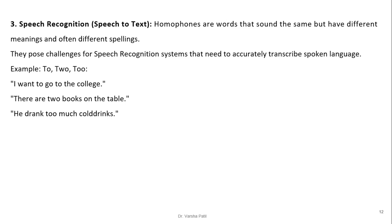Speech recognition (speech-to-text conversion): homophones are words that sound the same but have different meanings and often different spellings, posing a challenge for speech recognition. For example, 'to,' 'two,' and 'too': 'I want to go to college,' 'there are two books on the table,' 'he drank too much.' When converting speech to text, neighboring context is needed to identify whether the word is 'to,' 'two,' or 'too.'